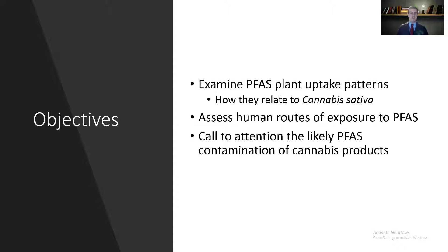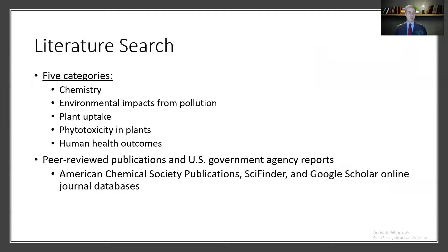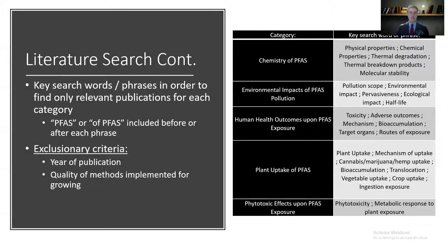This is a literature-based review. My literature search was broken down into five different categories, and peer-reviewed publications were taken from online journal databases such as ACS Publications, SciFinder, or Google Scholar. You can see on the right in this table some various search words or phrases that were used to find pertinent publications, as well as exclusionary criteria related to publication quality and methods implemented for growing various vegetables in contaminated PFAS environments.